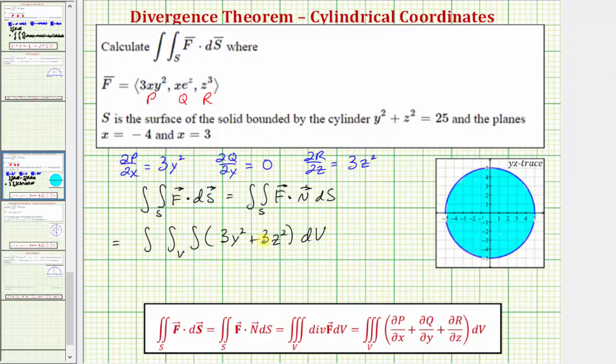And now because the surface S is a cylinder, it does make sense to use cylindrical coordinates. But we need to be careful here though, because notice how the cylinder is running along the x-axis and is bounded by x = -4 and x = 3. So differential V is not going to be equal to r dz dr dθ. It's going to be equal to r dx dr dθ.